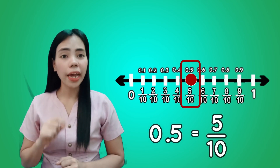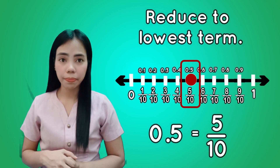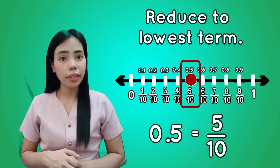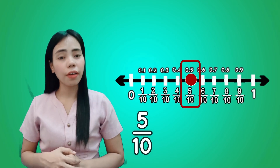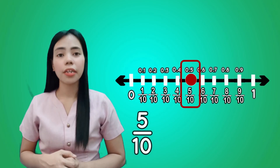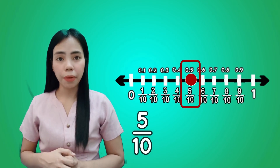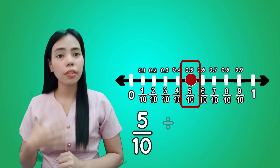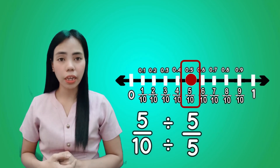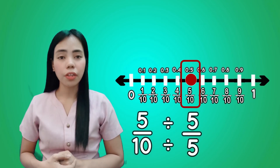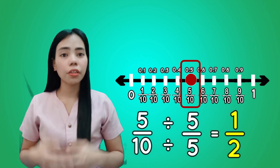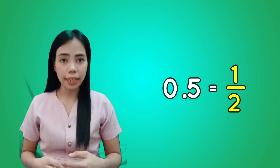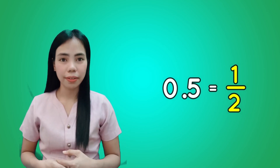Can we still reduce 5 tenths to lowest terms? The answer is yes. Get the GCF of 5 and 10 — the GCF is 5. Divide both numerator and denominator by 5, and the result is 1 half. Therefore, the fraction form of 5 tenths is 1 half.